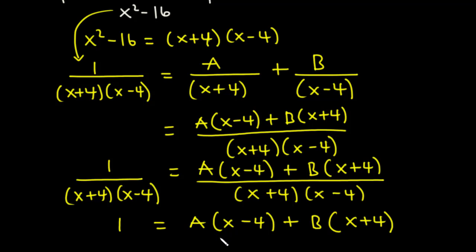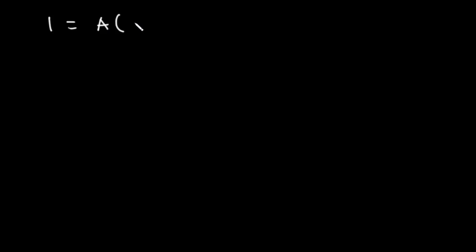Now we are going to find the values of A and B. To find B, we put in a value of x that will make A's term go to 0. To find A, we put in a value that will make B's term go to 0. We have 1 = A(x - 4) + B(x + 4).